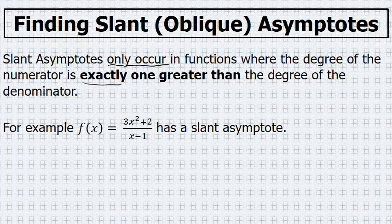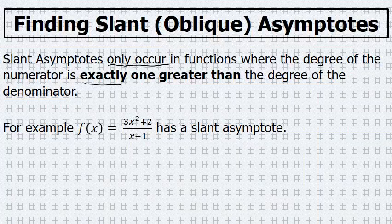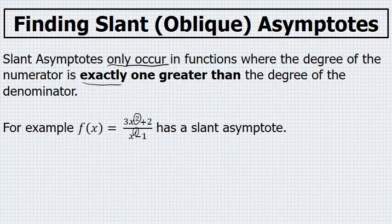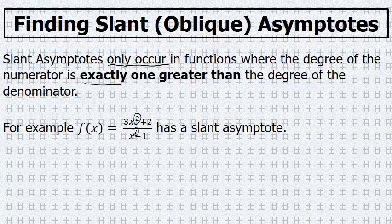For example, in the function f(x) equals 3x squared plus 2 over x minus 1, the degree of the numerator is 2 and the degree of the denominator is 1. The degree of the top is 1 greater than the degree in the bottom, so there is a slant asymptote.